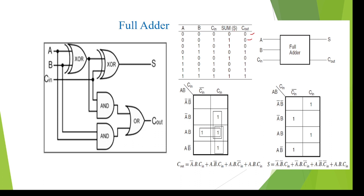If you want to write the sum equations, we can write like this: Sum equals 1 at A-bar, B-bar, C; plus sum equals 1 at A-bar, B, C-bar. We can also write sum equals 1 at A, B, C, or else you can derive it using a K-map as well.